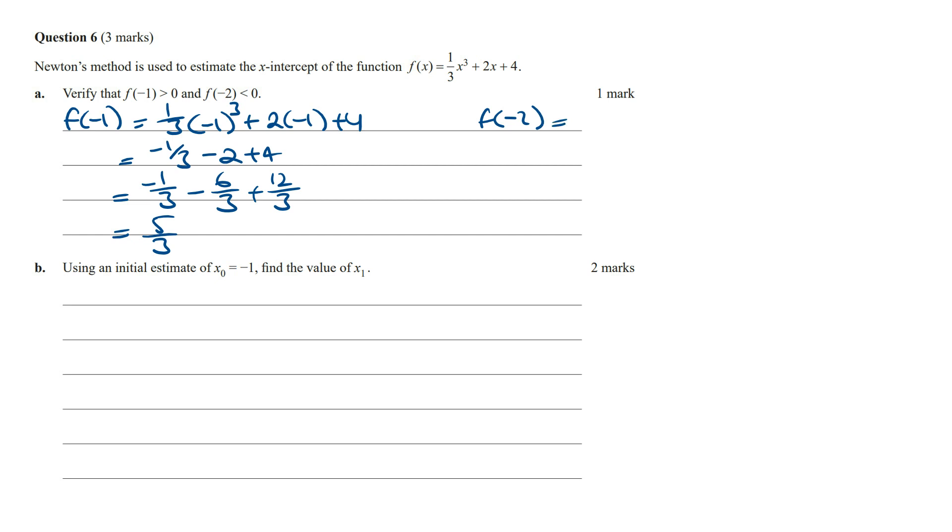f(-2) is going to equal 1/3 times (-2)³ plus 2 times (-2) plus 4. And so this is going to be -8/3 minus 4 plus 4 which is equal to -8/3. And so therefore, f(-1) is larger than 0 and f(-2) is less than 0 as required.